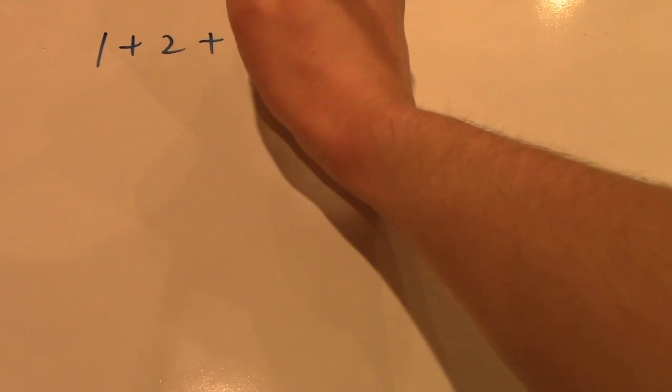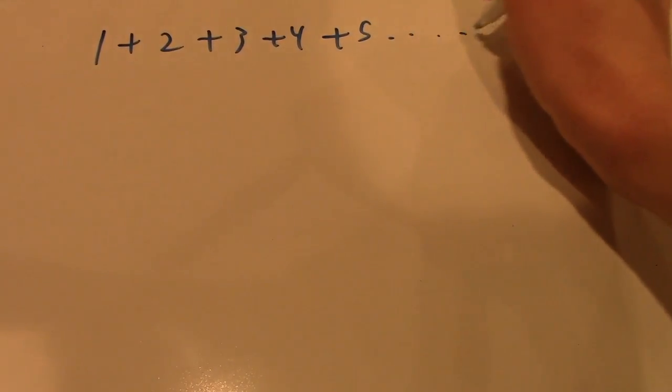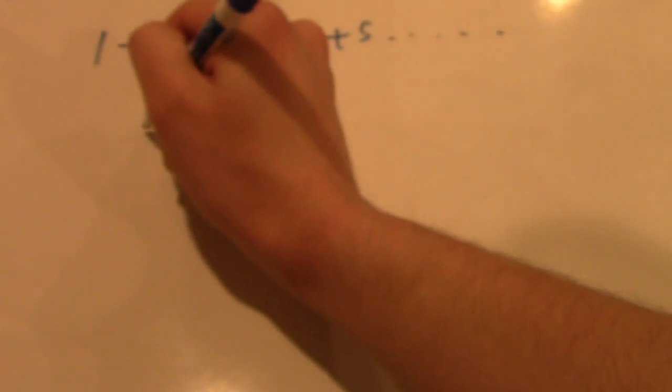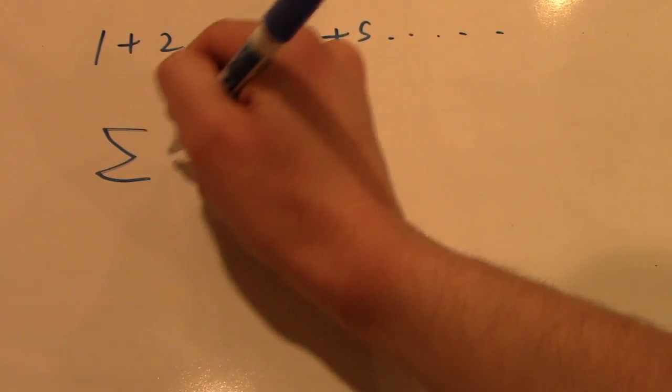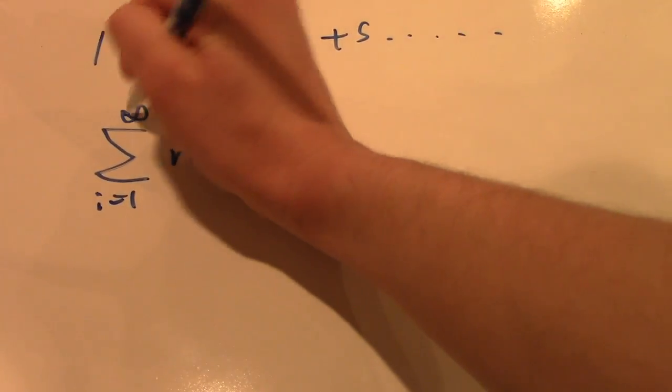Alright, so the interesting sum that we're going to be looking at is 1 plus 2 plus 3 plus 4 plus 5, all the way on up to infinity. Now, we can write this in a much more compact form as the sum of the digits n from 1 to infinity.